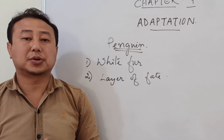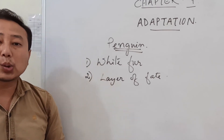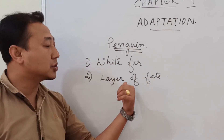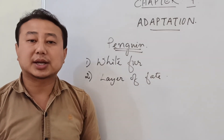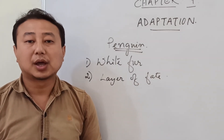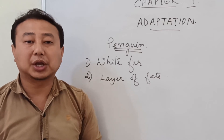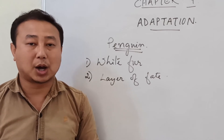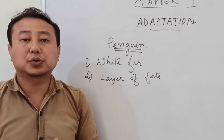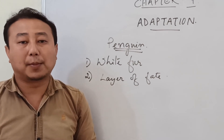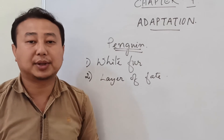The second adaptation found in penguins is a layer of fat present on their body. To survive in the polar climatic region, penguins have a layer of fat. Fat is an insulator of heat, which prevents heat energy from their body from escaping to the surroundings, keeping their body warm even in the polar climatic area.